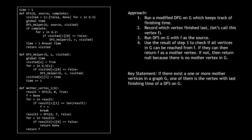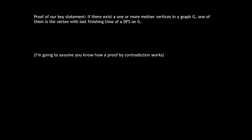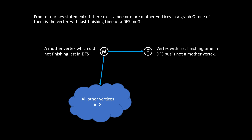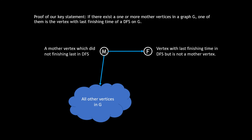Now let's prove the key statement by contradiction. Assume a mother vertex M exists but is not the vertex with the last finishing time, and that F — the vertex with the last finishing time — is not a mother vertex. Since M is a mother vertex, all vertices in G including F are reachable from M. We divide the proof into two cases: case one, there exists a path from F to M; case two, there is no path from F to M.